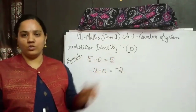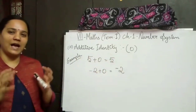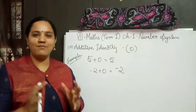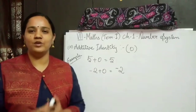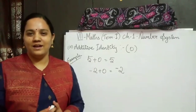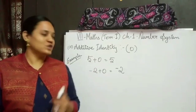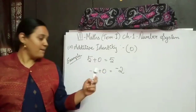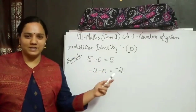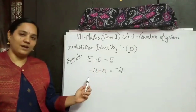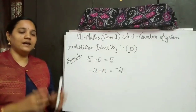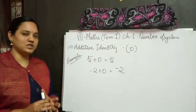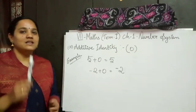So additive identity is zero. If we are adding any number to zero, what will be the answer? The same number only. If we are adding any number to zero, we will get the same number only. Here I added 5 with 0, so the value is 5. Minus 2 plus 0, the value is minus 2. The identity of that number does not change when we add zero. That is why additive identity is mentioned as zero.